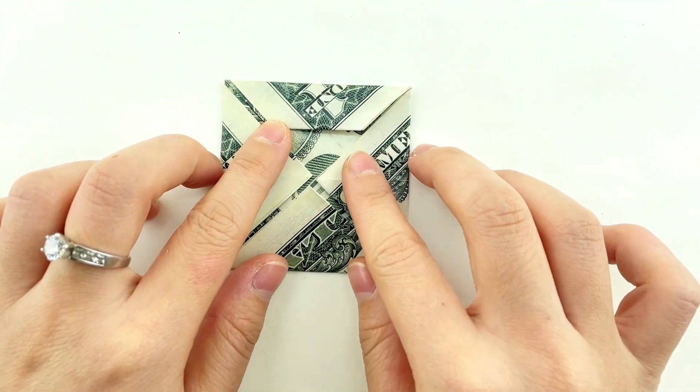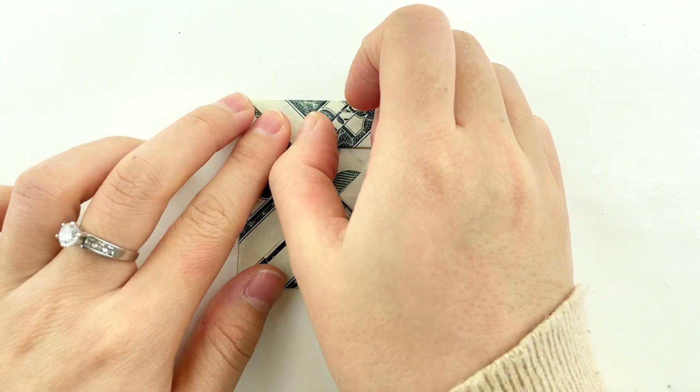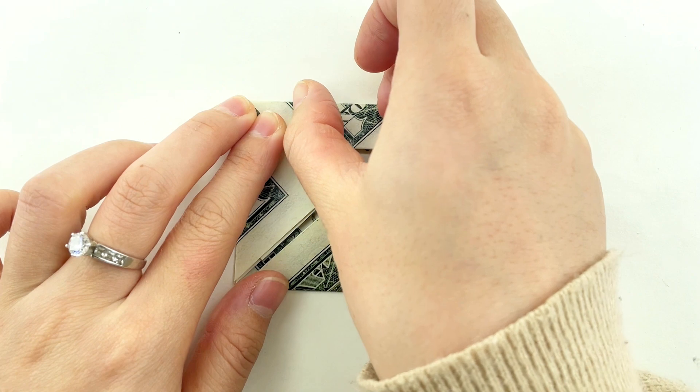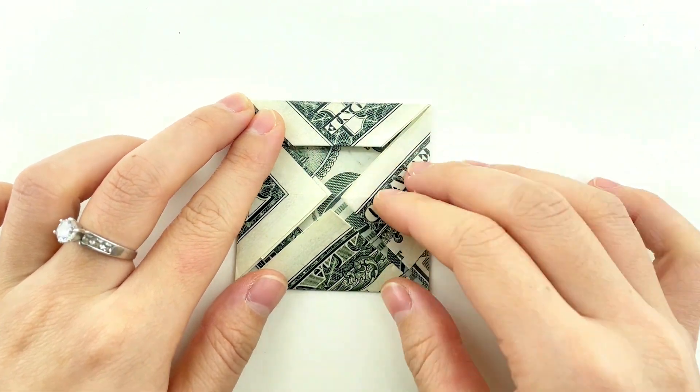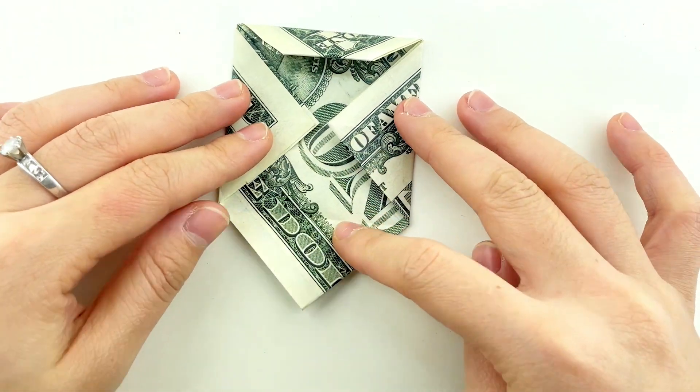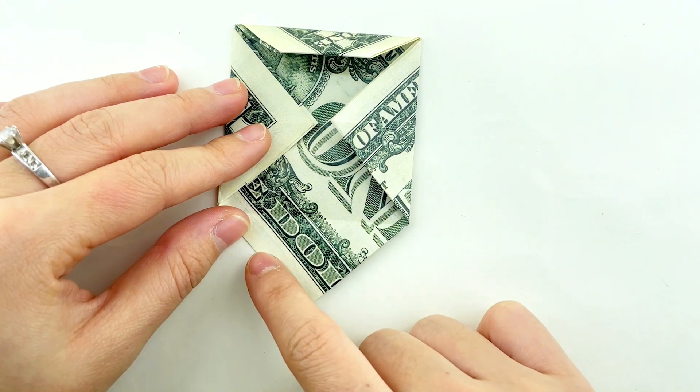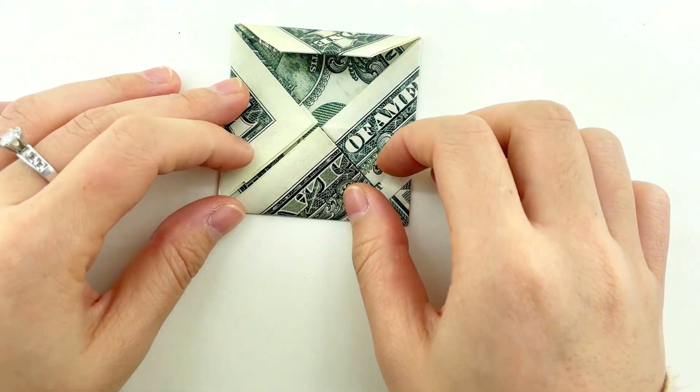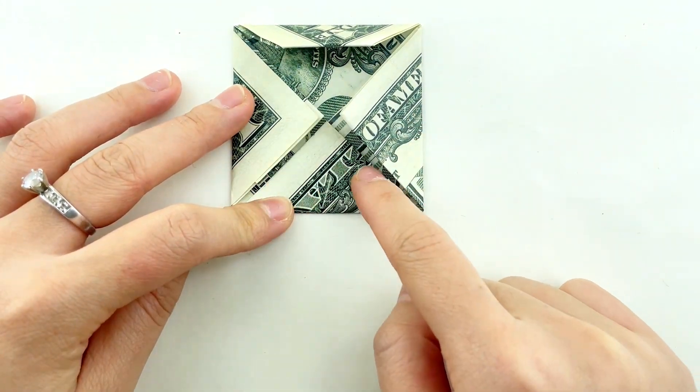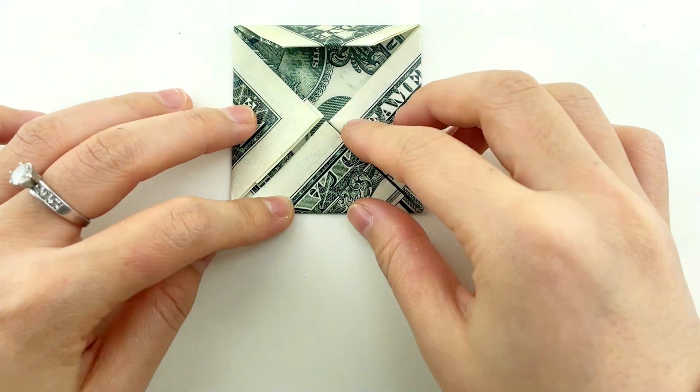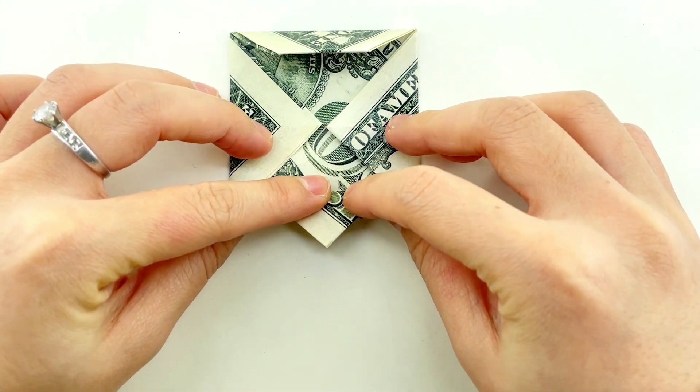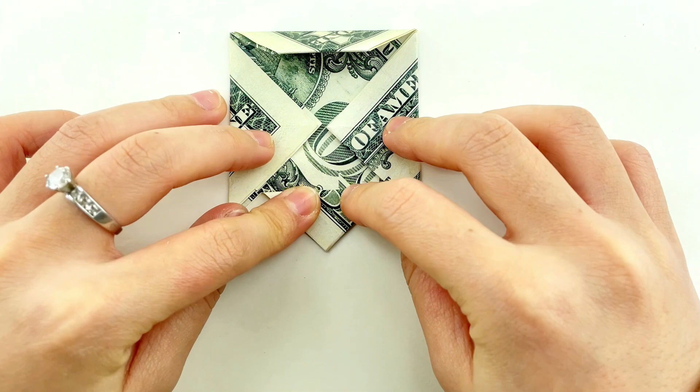Mirror this step with the opposite tip. But instead of folding inside, fold it outside to balance your furry friend's silhouette.